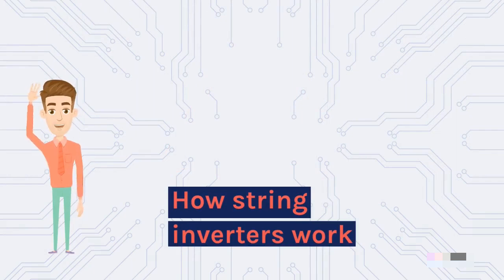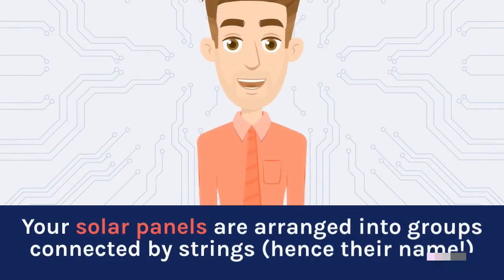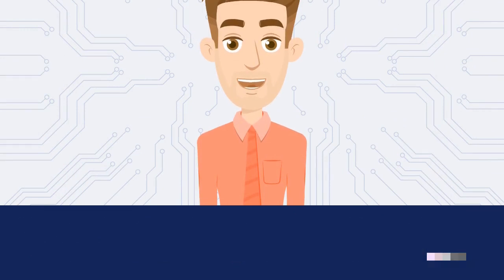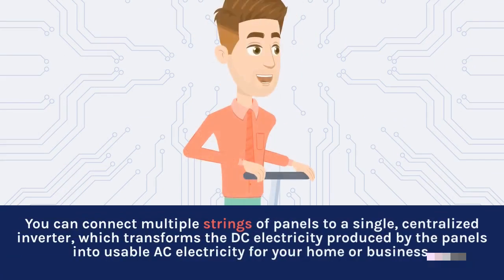How string inverters work: Your solar panels are arranged into groups connected by strings, hence their name. You can connect multiple strings of panels to a single, centralized inverter, which transforms the DC electricity produced by the panels into usable AC electricity for your home or business.